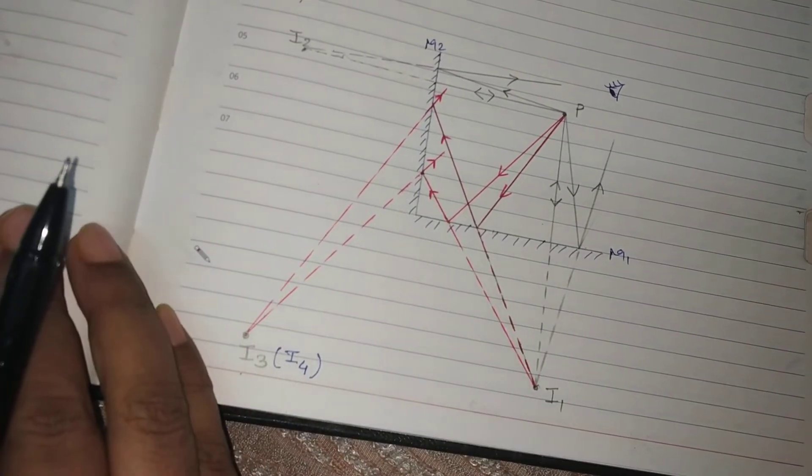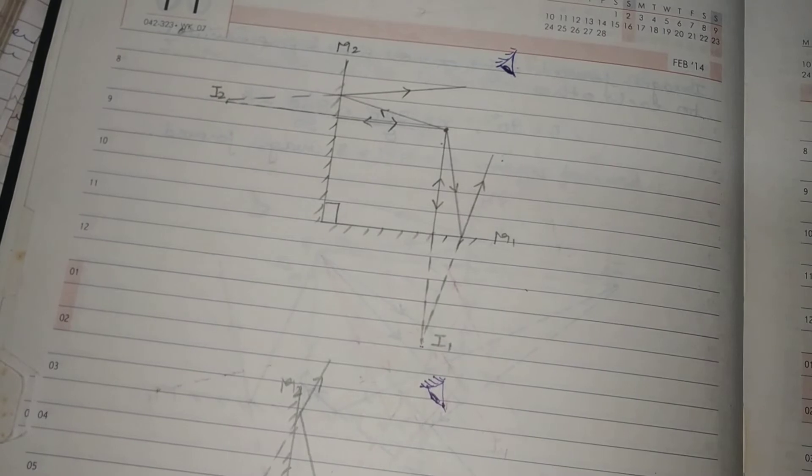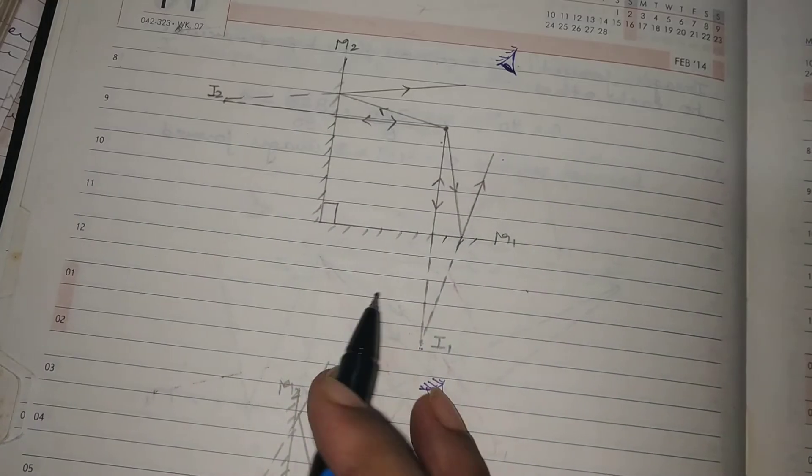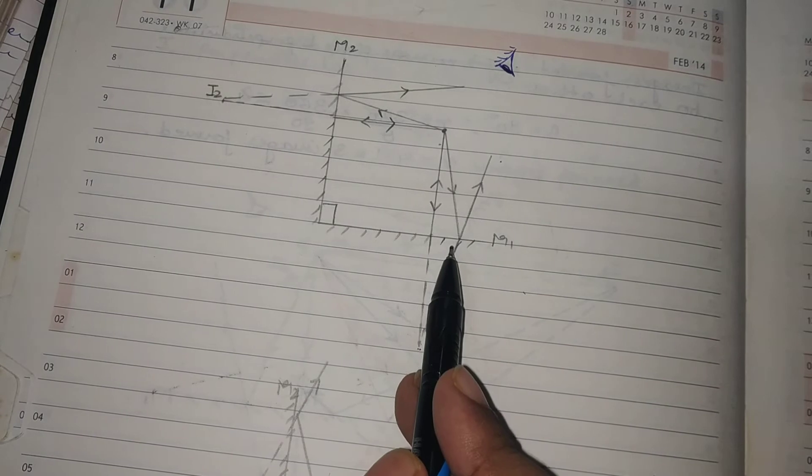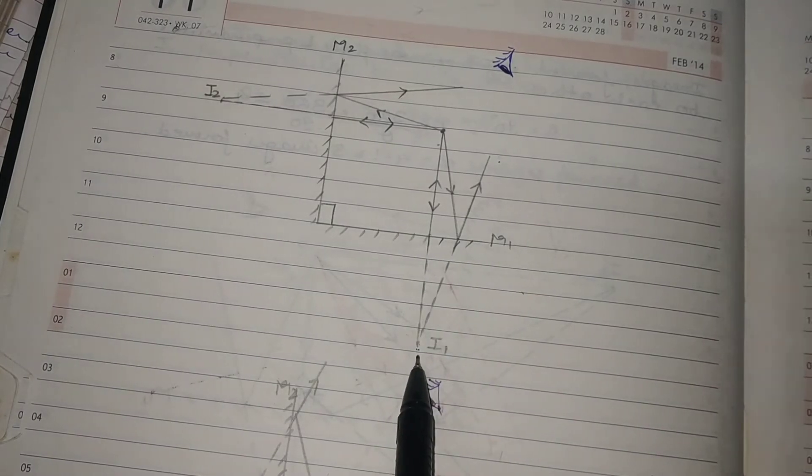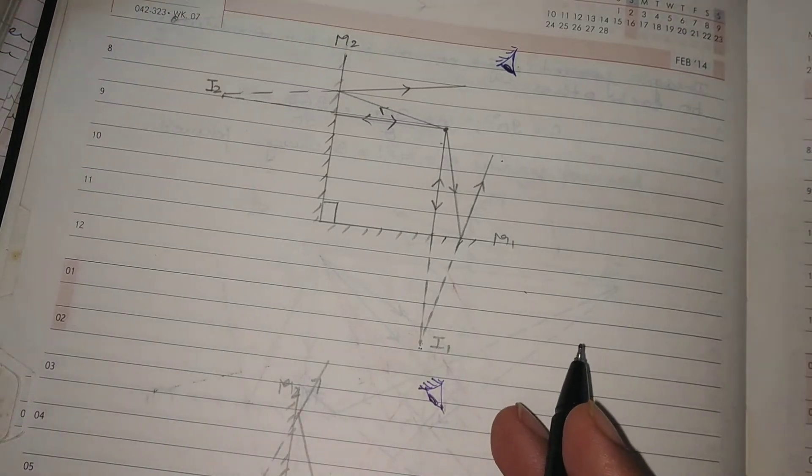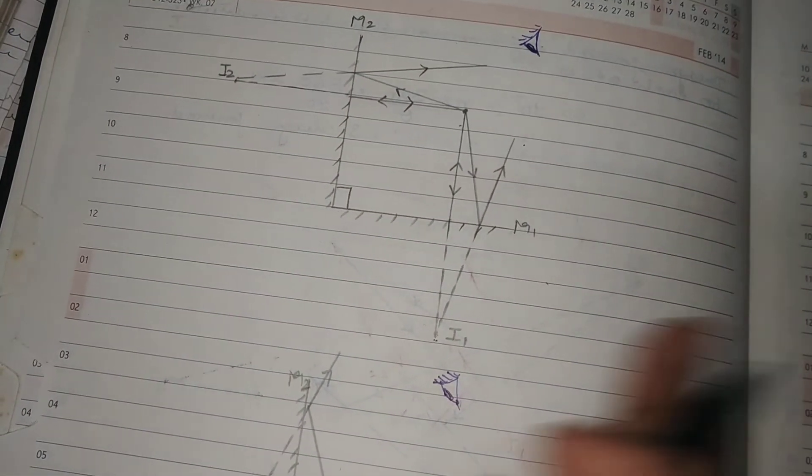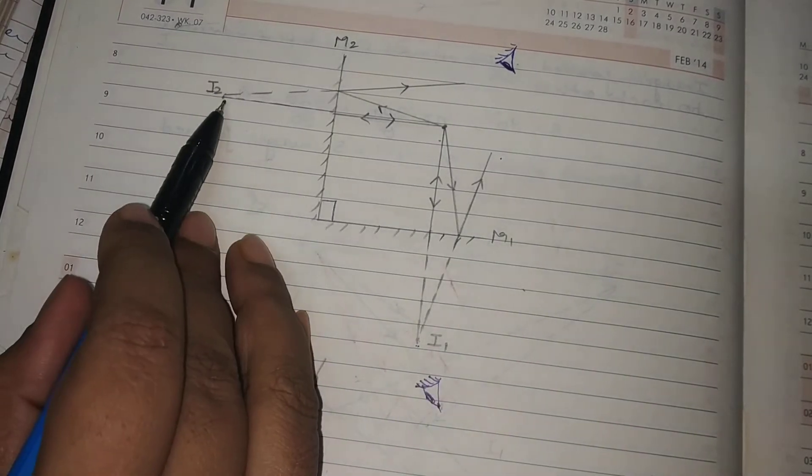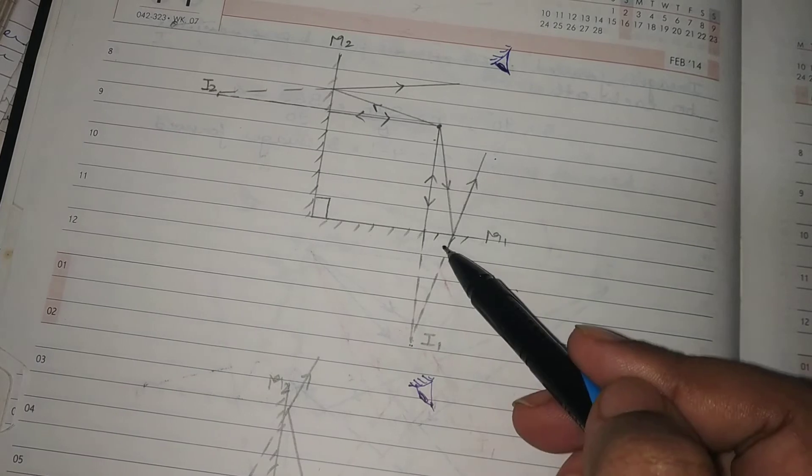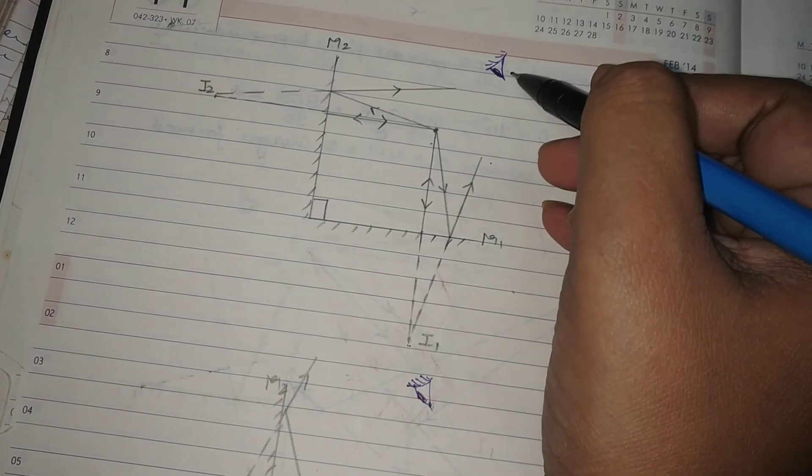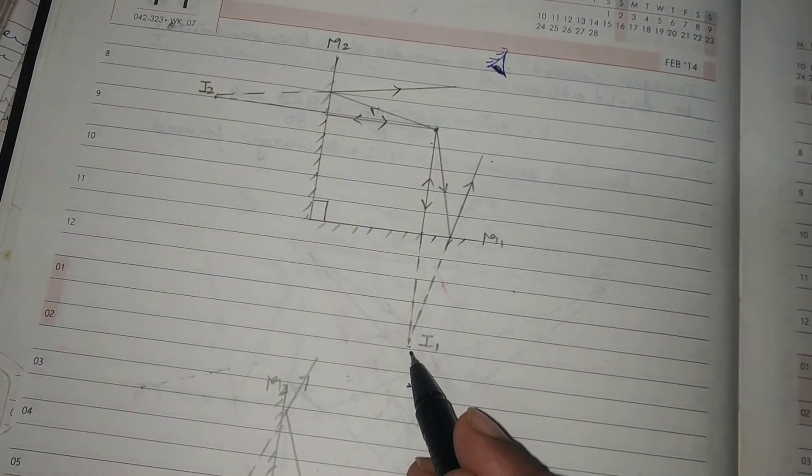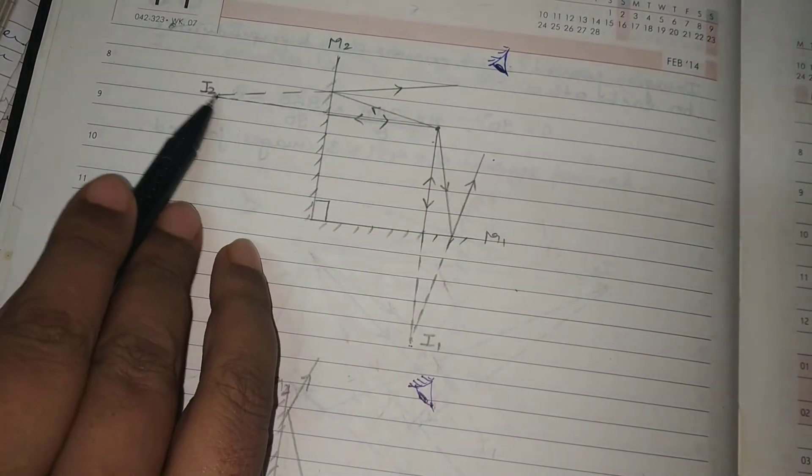So let's take a quick recap of what we did just now. So here I have split the diagram into two parts. So in the first part of the diagram, I have shown you the formation of the images I1 and I2. The I1 image as well as I2 image are shown to be formed because of these two rays.